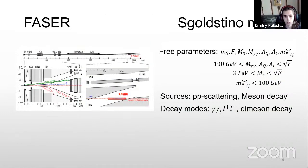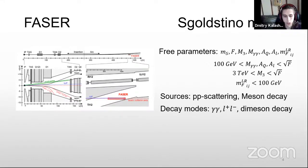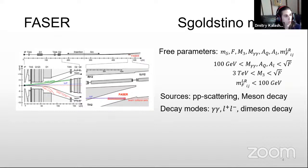As I said, it is located far from the interaction point, so its main goal is to find long-lived, weakly interacting particles — and our model consists of these particles. In general, this model is described by the mass of this particle, the supersymmetry breaking parameter, and other soft parameters, such as the gluino mass. These parameters are constrained.